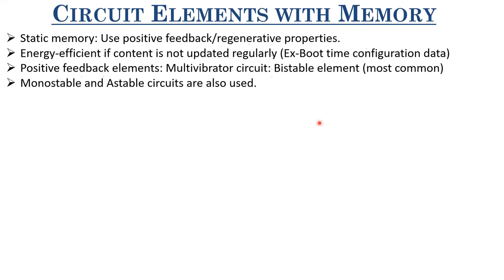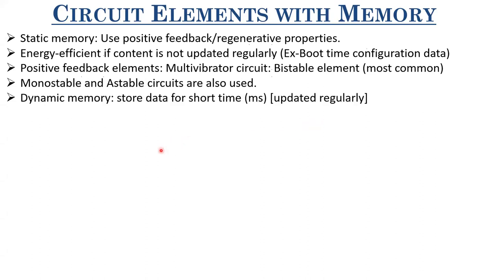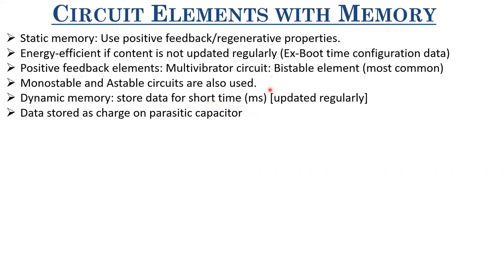Now let us look at dynamic memory. The dynamic memory stores data for a short time as charges on a parasitic capacitor. Since data leaks due to charge decay mechanisms, the storage time on parasitic or high-impedance nodes is typically some milliseconds. So we have to update them regularly. Dynamic memory is particularly best for systems in which the clock continues. There are several problems like charge leakage due to sub-threshold current or diode leakages, as well as charge sharing problems when working with high-impedance nodes.